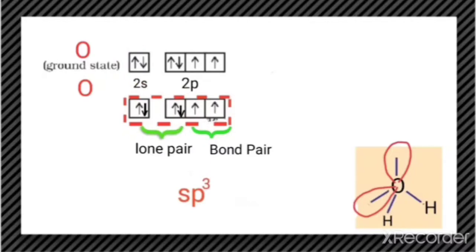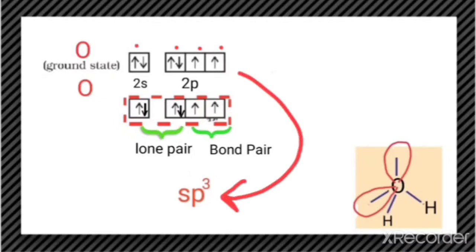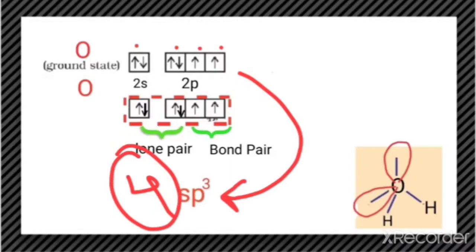How is it sp3? Because one s orbital and three p orbitals are getting hybridized. Therefore four atomic orbitals are getting hybridized, resulting in the formation of four sp3 hybrid orbitals. These sp3 hybrid orbitals adopt a tetrahedral structure as shown here.